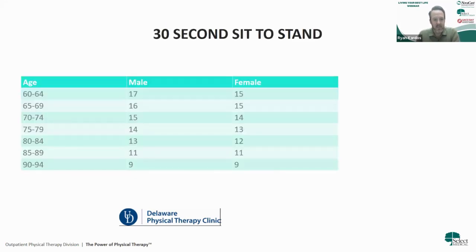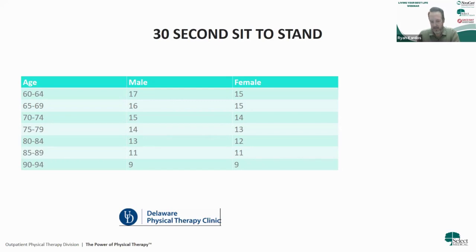Another test is the 30-second sit-to-stand: how many full repetitions can you stand up and sit down from a chair in 30 seconds using your arms on the armrests? This significantly decreases as we age, but even in our early 90s, nine repetitions in 30 seconds is the benchmark. We all stand up and sit down from a chair every day, but how often do we actually challenge ourselves to see what our max effort could be?